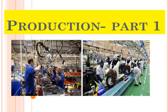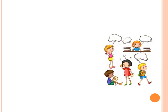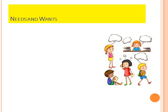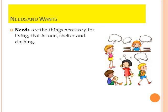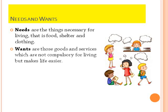So let's see what's inside production part 1: needs and wants. As human beings, there are certain things which are essential for us to live and certain things which are not. We put them into two categories: needs and wants. Needs are the things necessary for living — that is food, shelter and clothing. Wants are those goods and services which are not necessary for living but make life easier, such as luxury vehicles or designer clothes.